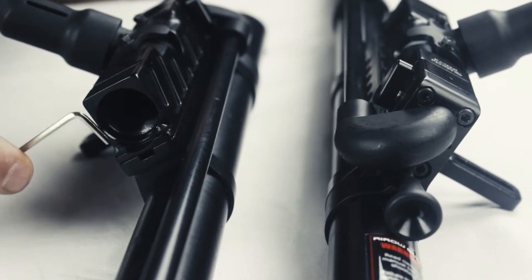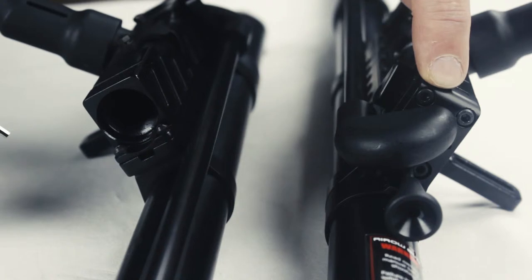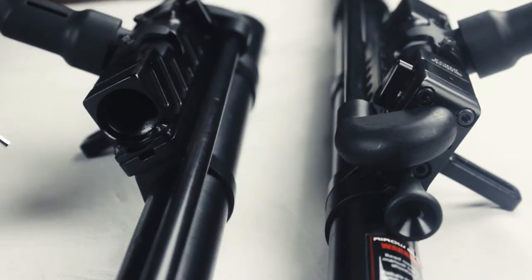With the barrel removed, you can now see the front mounting screws of the receiver and here we have the back mounting screws of the receiver. To lift the receiver from the air chamber, you need to remove these screws and these two on the back.